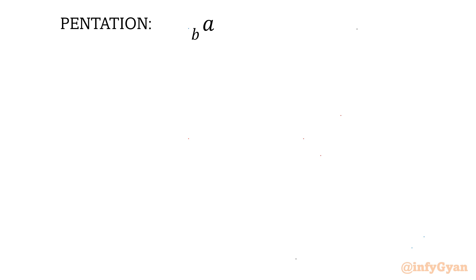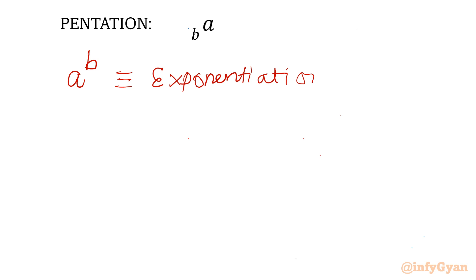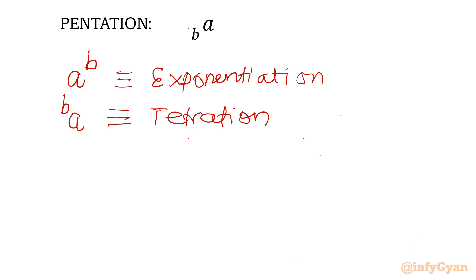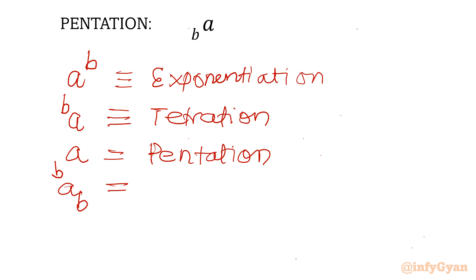Let us begin by writing four symbols. First, a to the power b — this is exponentiation. If we write b in the top left side, that is tetration. If b is in the bottom left corner, that is the symbol for pentation. And if b is in the bottom right corner, that is the symbol for hexation hyper operation.